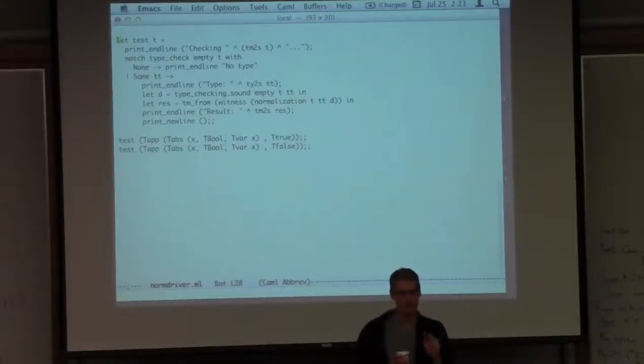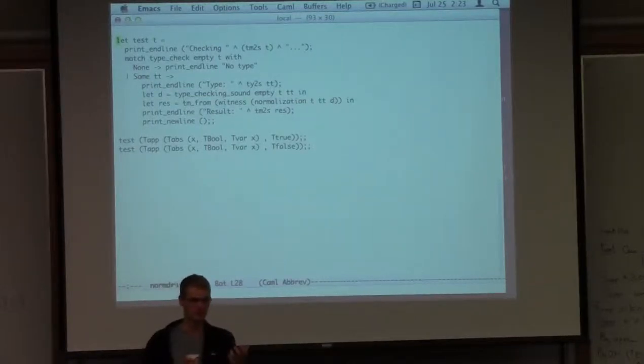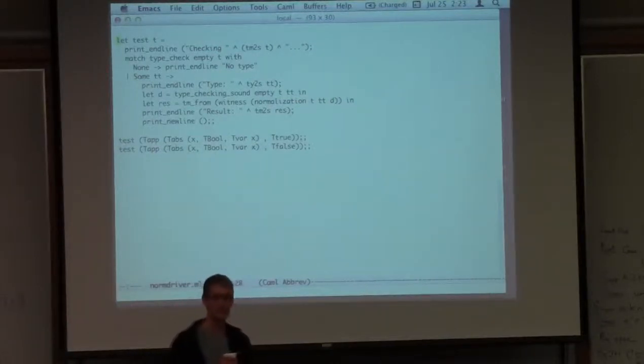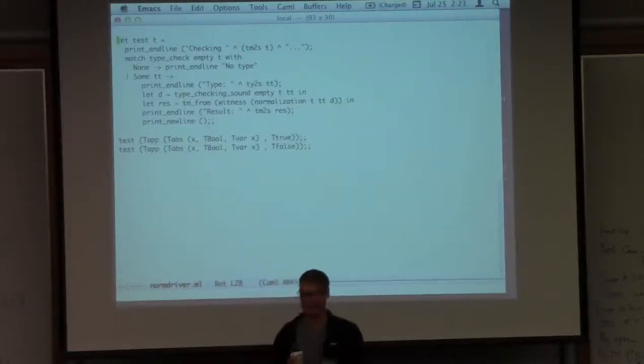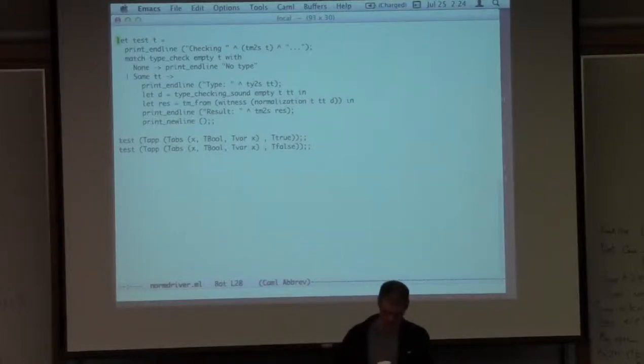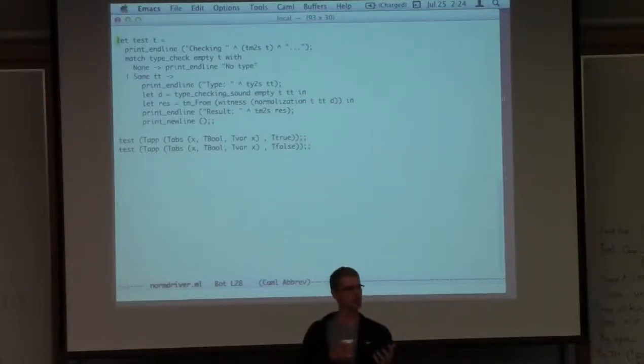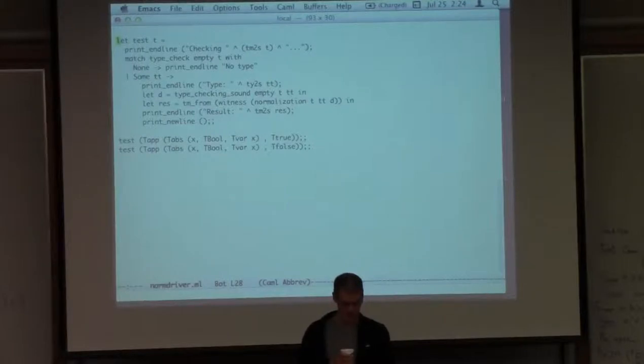There's something a little funny here, because we're not actually passing to the type checking sound function the evidence that the type checker returned anything in particular. So the connection between what the type checker returned and what we're passing to type checking sound is entirely up to us to get wrong. You could probably piece it together in Coq instead and extract it that way. I just didn't bother because this was quite close to the lecture. You could do this in a sound way, but it's just an illustration that when you're writing this driver stuff, you are really flying without a harness.